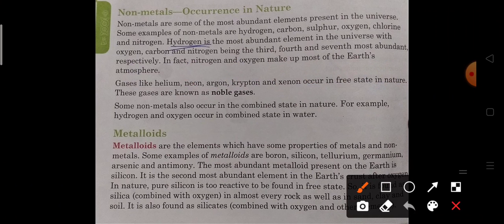About non-metals: Non-metals are some of the most abundant elements present in the universe. Some examples of non-metals are hydrogen, carbon, sulfur, oxygen, chlorine, nitrogen. Hydrogen is the most abundant non-metal, while in metals aluminium is the most abundant.